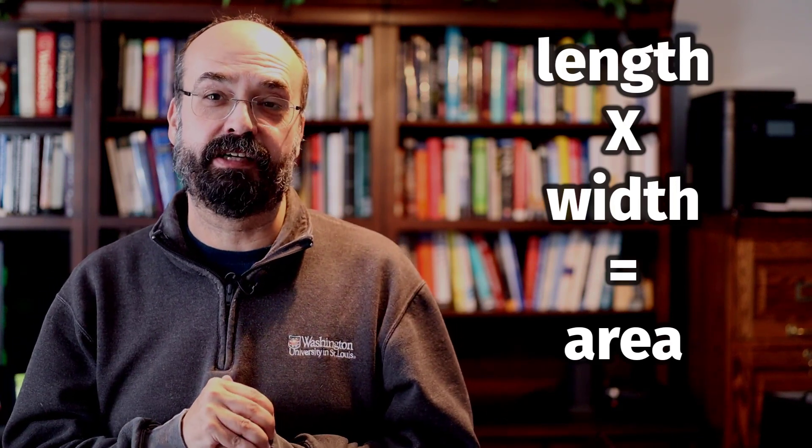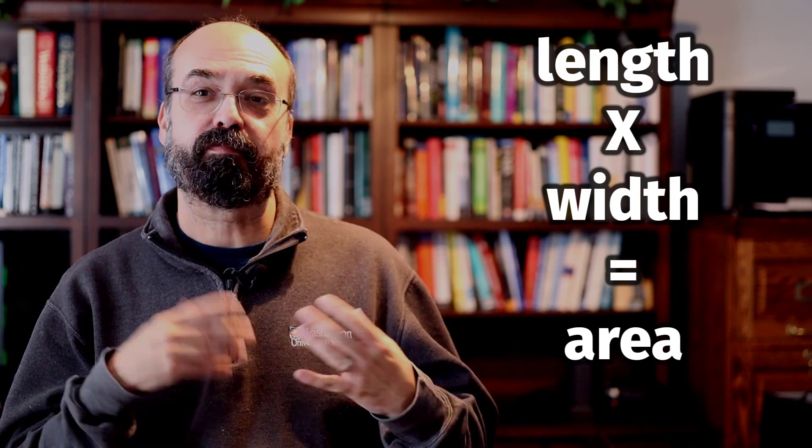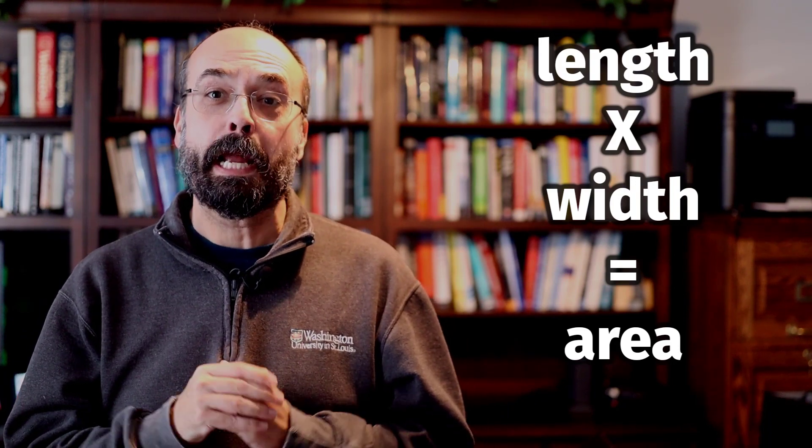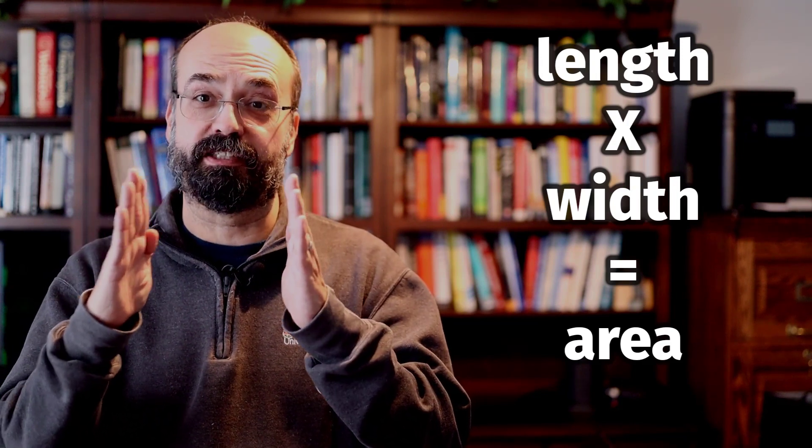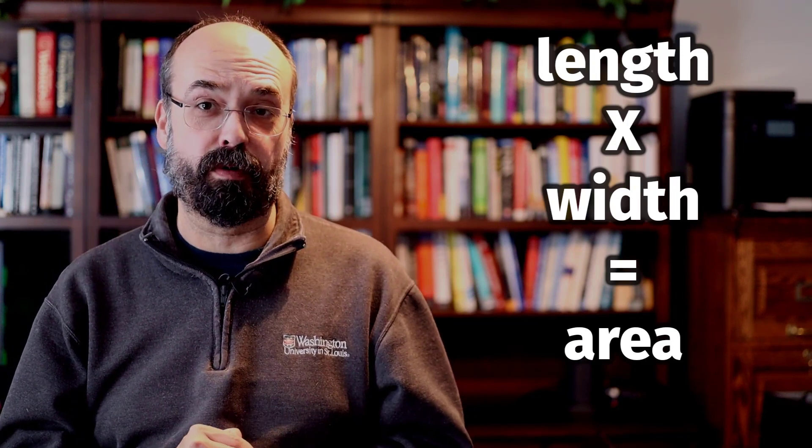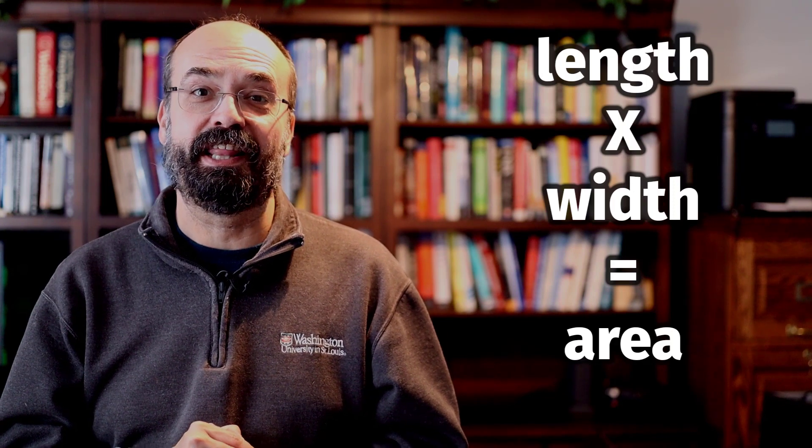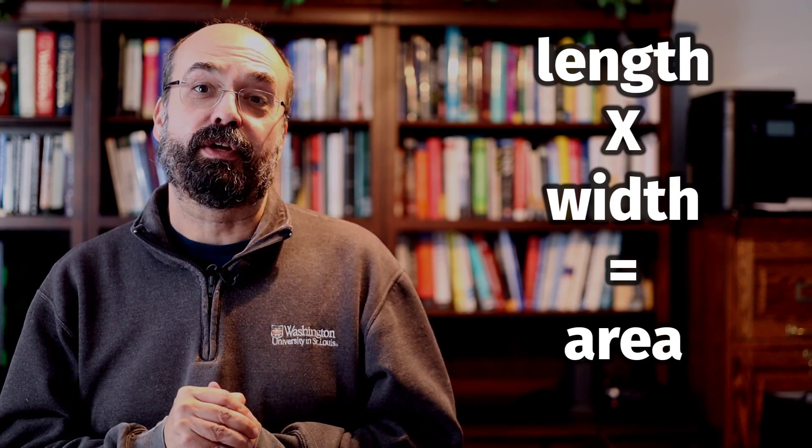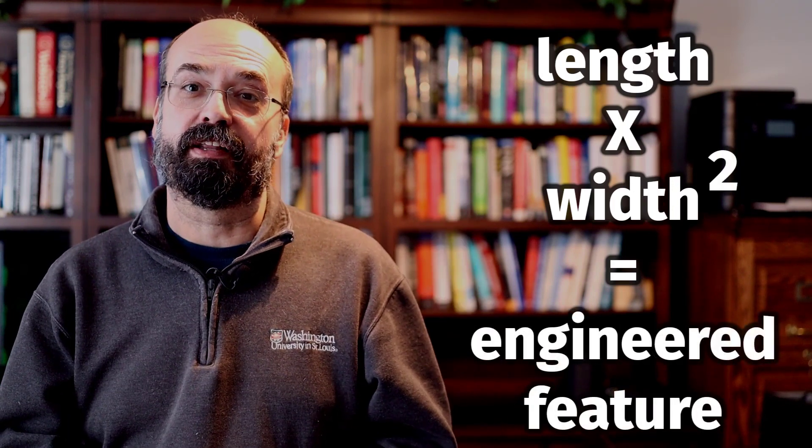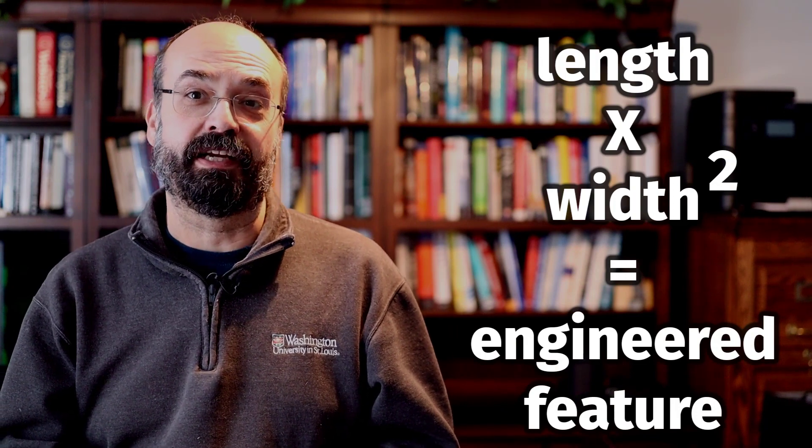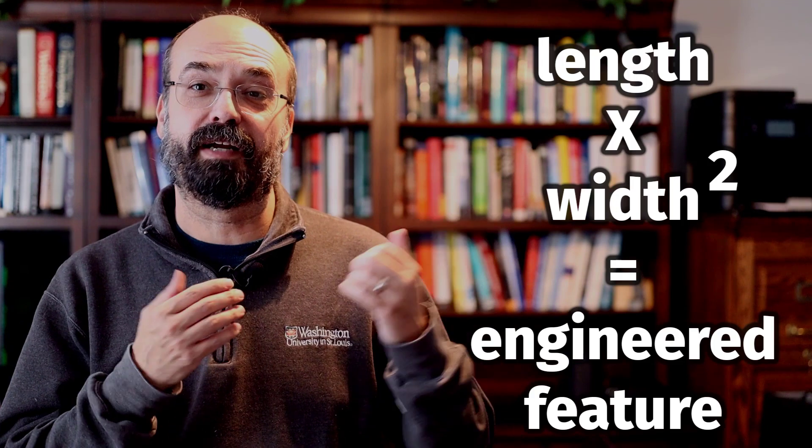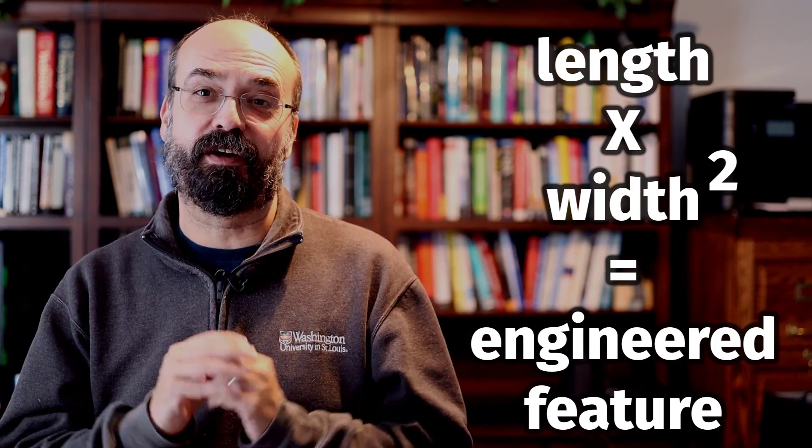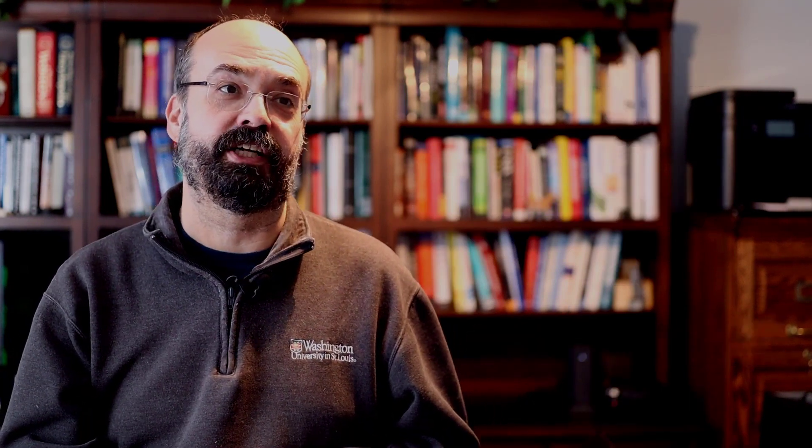But maybe, taxing authorities always throw curveballs into this, maybe taxes are more if you have more street front. So the width becomes much more important than the length. So you square the width or multiply it by something. It doesn't really matter that you're squaring it, cubing it, or multiplying it by a ratio. That's for the model to figure out. You're just giving it a hint. You're pushing it in the right direction.